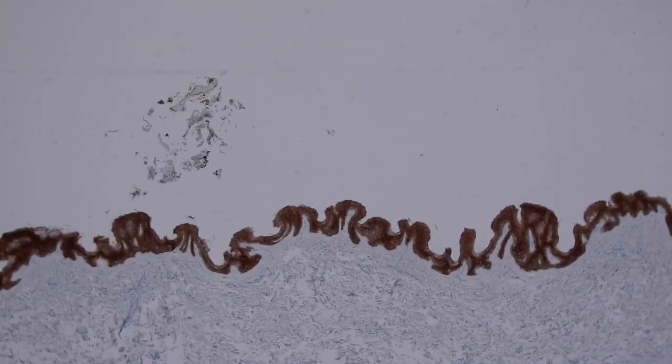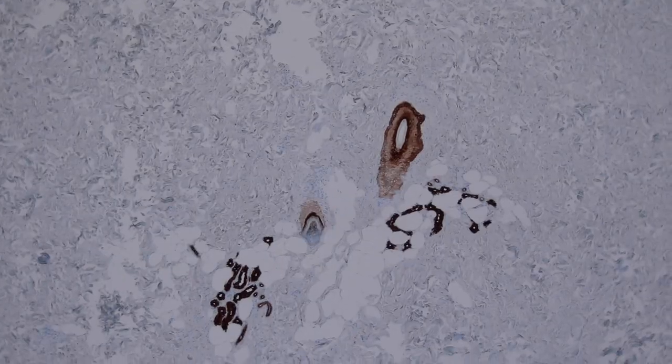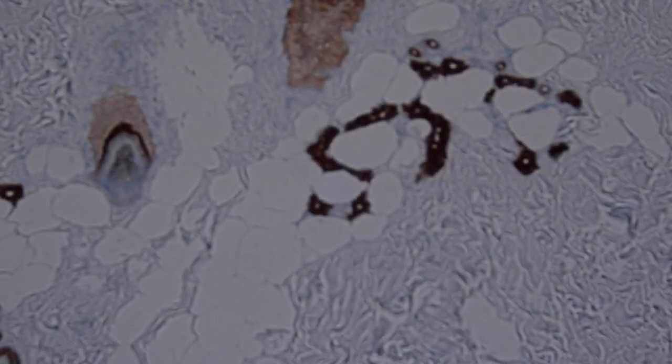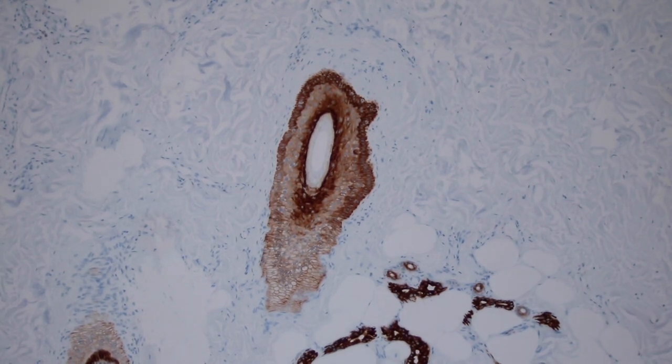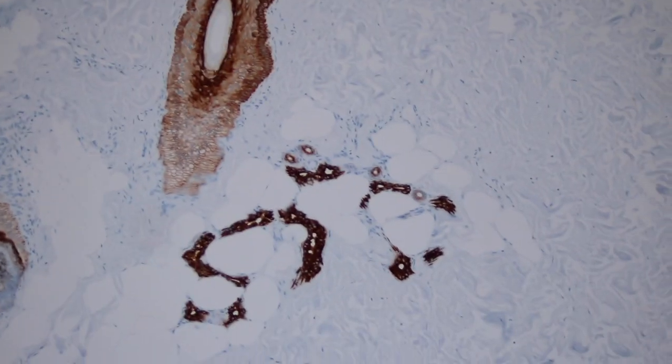So keratin highlights the normal epidermis and when we look down at the structures in the dermis, you can see that these things we talked about earlier, the hair follicle also made of epithelium so it's keratin positive. The sweat glands also made of epithelium so they're keratin positive.